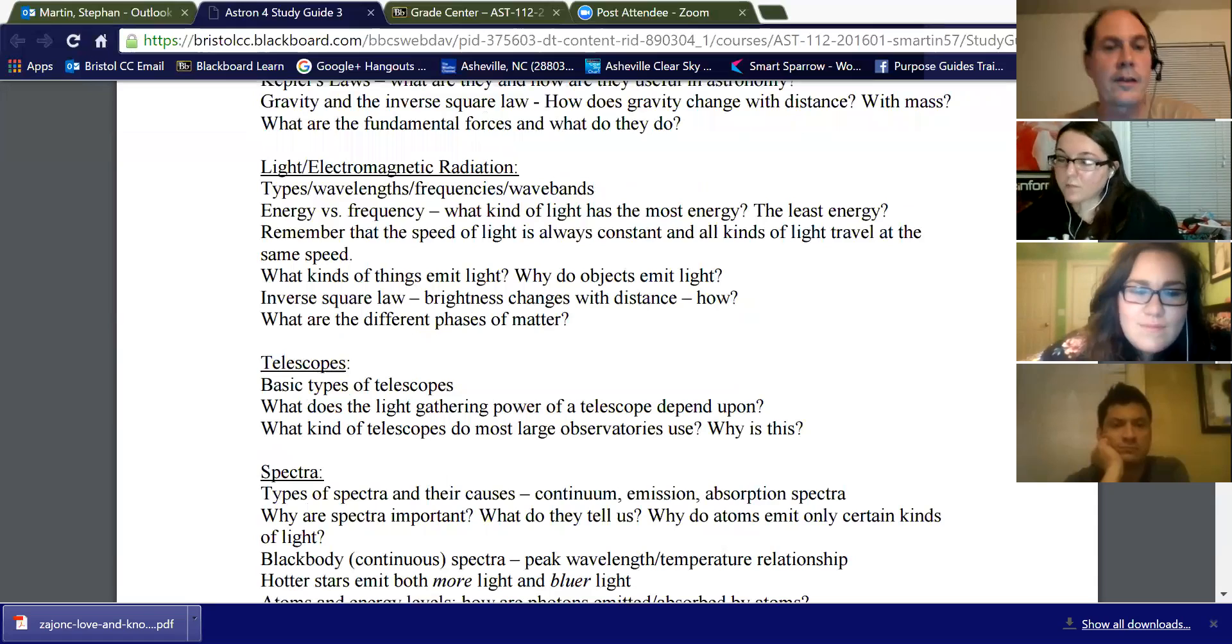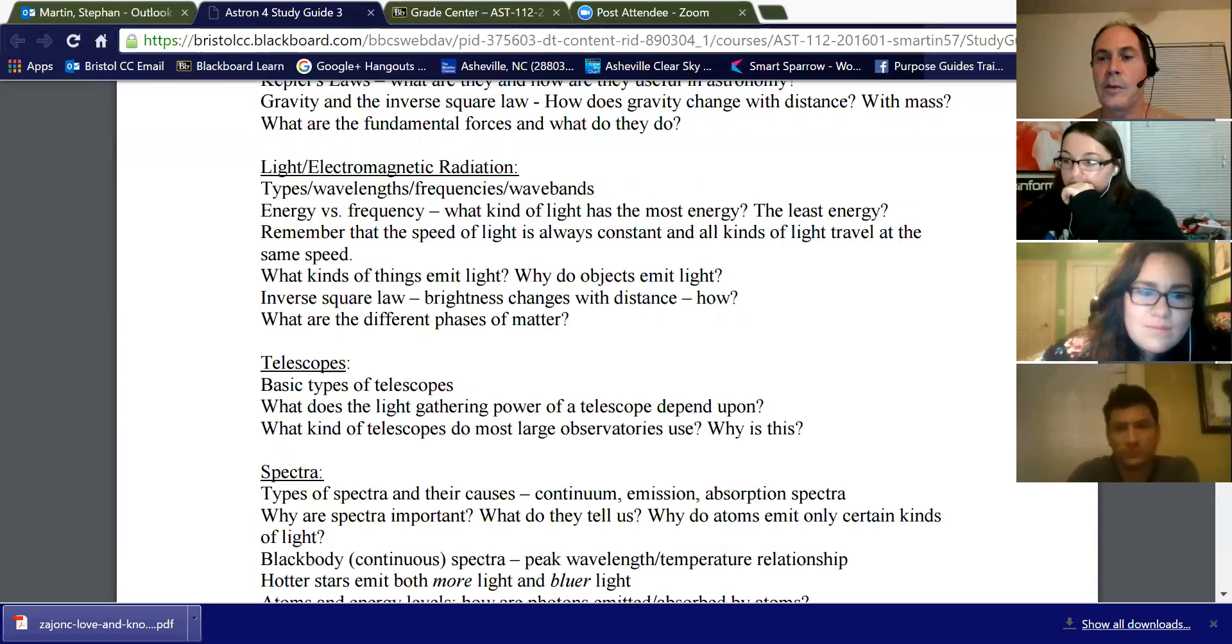Different phases of matter. Well, as you heat up matter, the molecules in the material start moving faster and faster. And so things go from solid to liquid to gas. And if you heat a gas too much, it becomes a plasma. So the sun and the stars are way too hot to be solid, liquid, or gas. They're all plasma, which is basically a superheated gas.